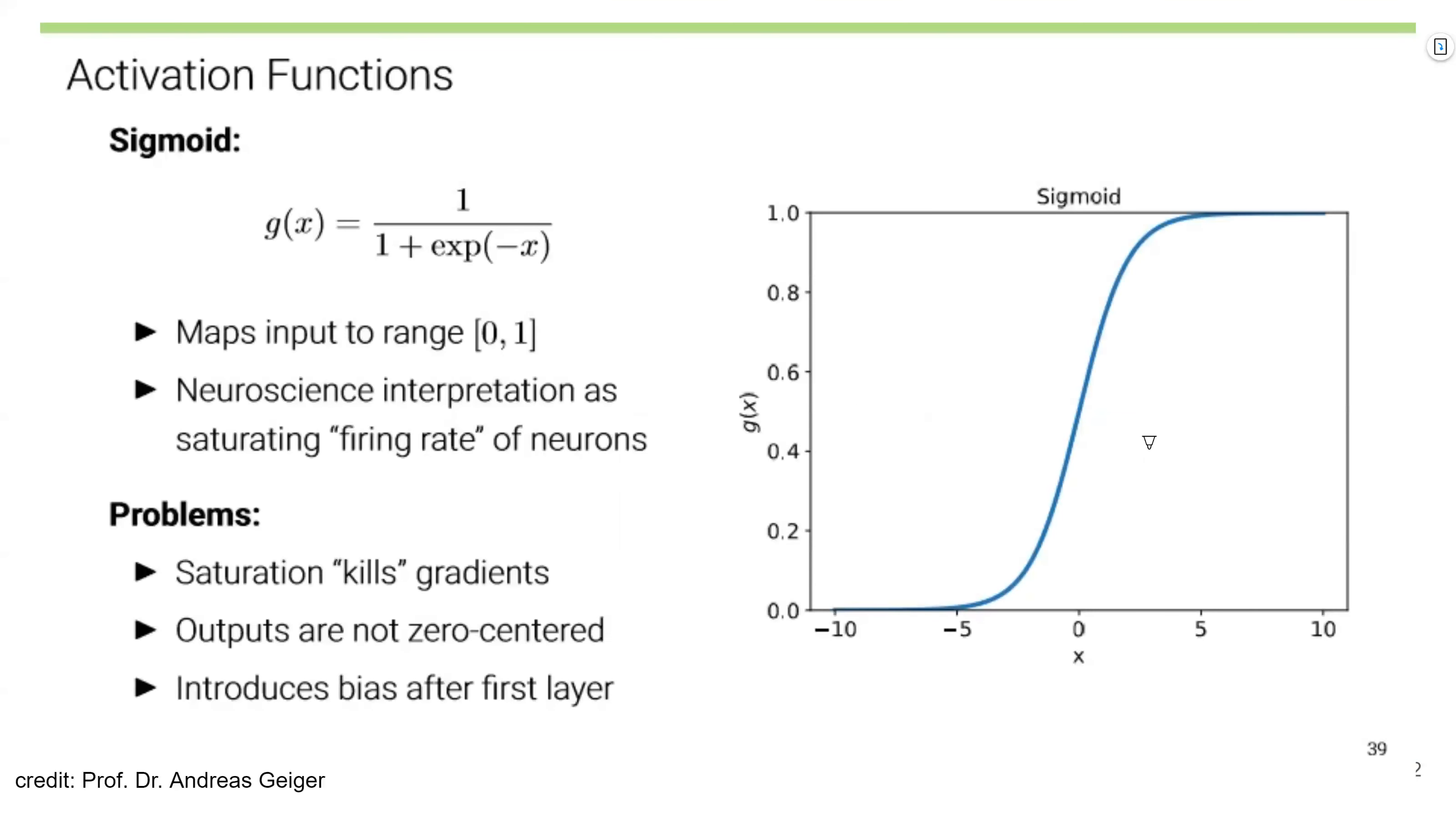From now on, we're going to revisit activation functions with respect to backpropagation. The sigmoid function is the first activation function we're going to look at. It looks like this: 1 over 1 plus exponentiation minus x. One characteristic of this sigmoid activation function is that it maps input to the range between 0 and 1. Therefore, we can use the sigmoid function to model a probability between 0 and 1. In neuroscience interpretation, it is regarded as the firing rate of neurons.